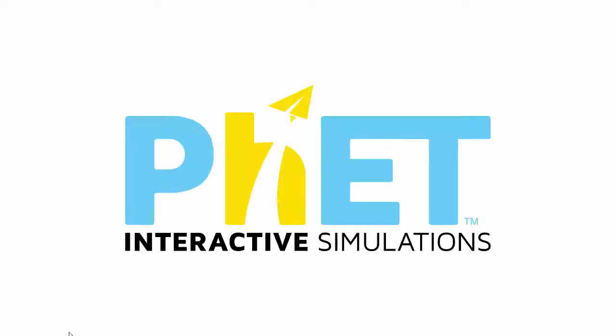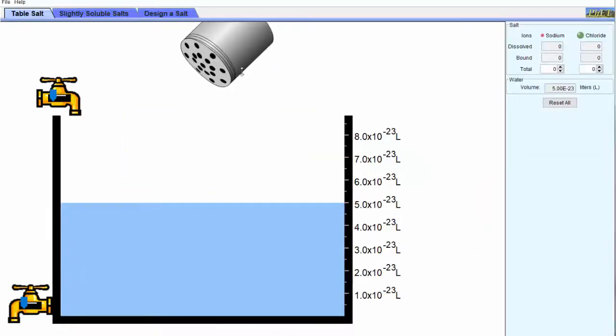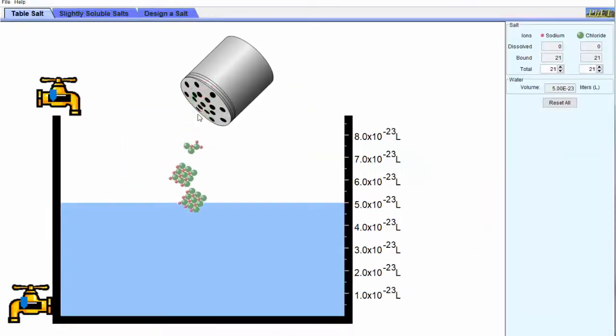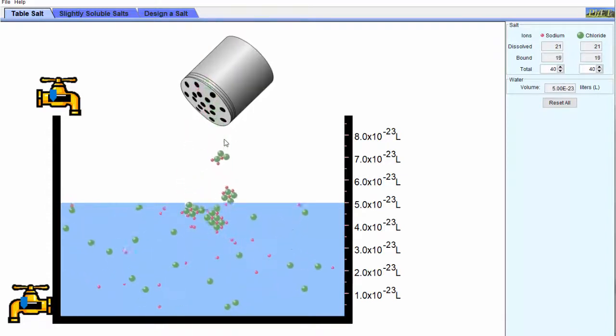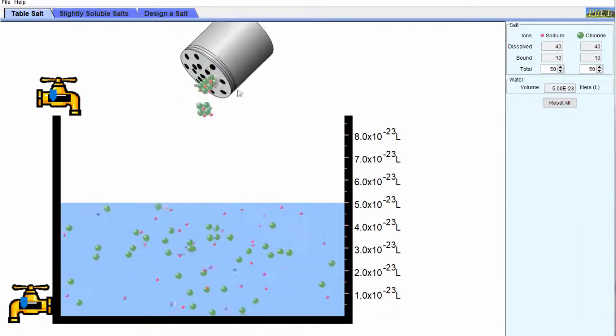I want to look at an example of dissolving and precipitation. This FET simulation shows, at a molecular level, crystals of sodium chloride being dropped into water. The red balls are sodium ions and the green ones are chloride ions. The individual water molecules aren't shown to avoid the picture becoming too cluttered. They just use a simple blue background.